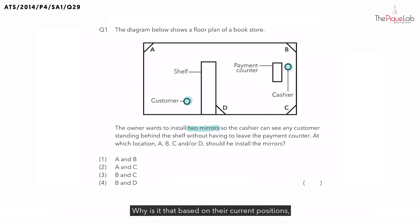Now here's a question. Why is it that based on their current positions, the cashier is unable to see the customer? It is because light reflected off the customer is blocked by the shelf. Since no light reflected off the customer is able to reach the cashier's eyes, this prevents the cashier from seeing the customer that's standing behind the shelf.